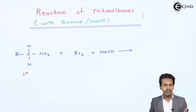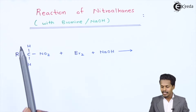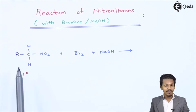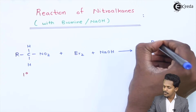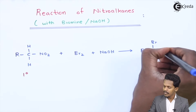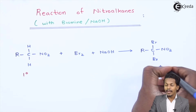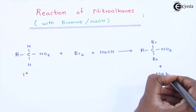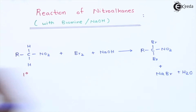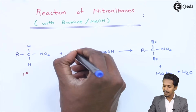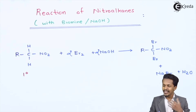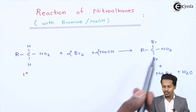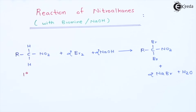During the reaction of primary nitroalkane with bromine, we get a dihalogen derivative of the corresponding compound. The product is R–CBr2–NO2, along with the byproduct NaBr and H2O. To balance the reaction, we add 2 moles of Br2 as well as 2 moles of NaOH, giving 2 moles of NaBr and 2 moles of H2O.